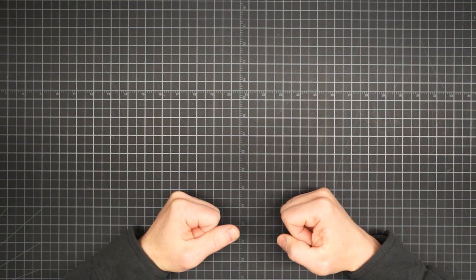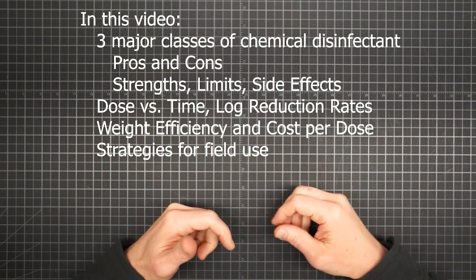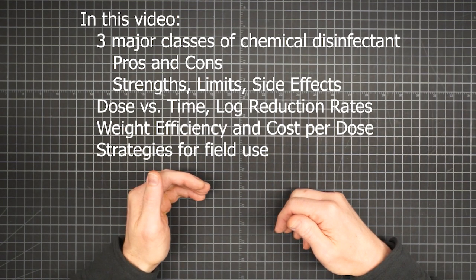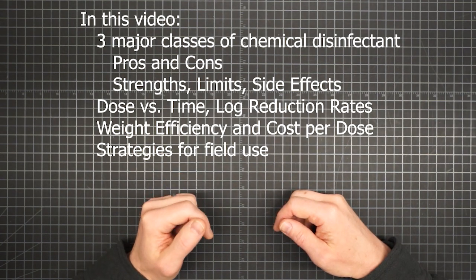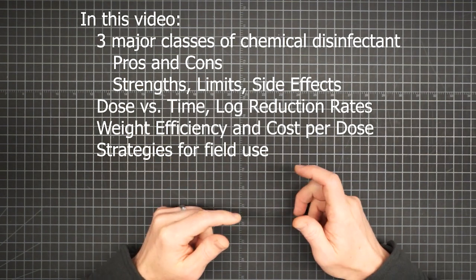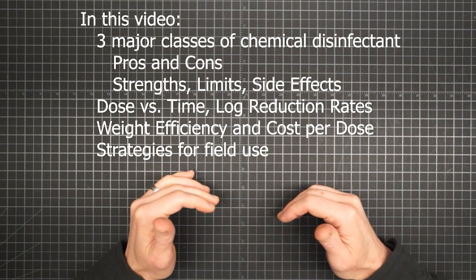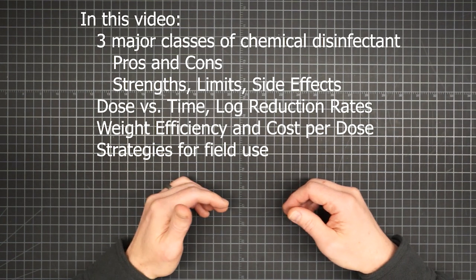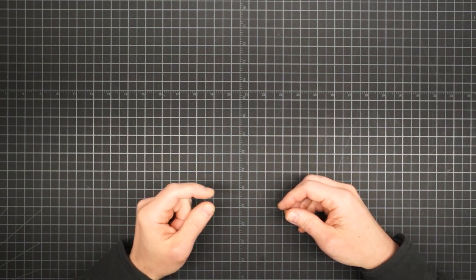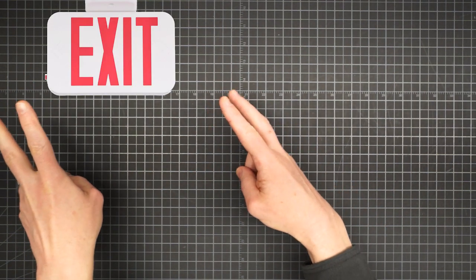Today we're here to talk about chemical disinfection methods. In this video you'll find information on the three major classes of chemical disinfectants made for backcountry use, with pros and cons for each method, including disinfection strengths, limits and side effects, the principles of dose versus time and log reduction rates, a look at the relative weight efficiency of each method, and strategies for use in the field, including how to combine methods for even greater effectiveness. If absolutely none of that is of interest to you, escape now while you still can.